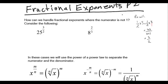The problem we're looking at is 25 to the three-halves. We're going to use something from the previous unit: the concept of power of a power. So we're essentially going to undo the three-halves and write it as 25 to the one-half in brackets, all raised to the power of three.